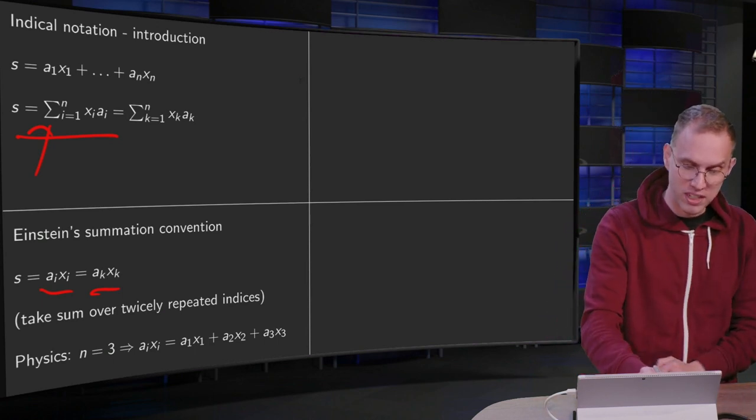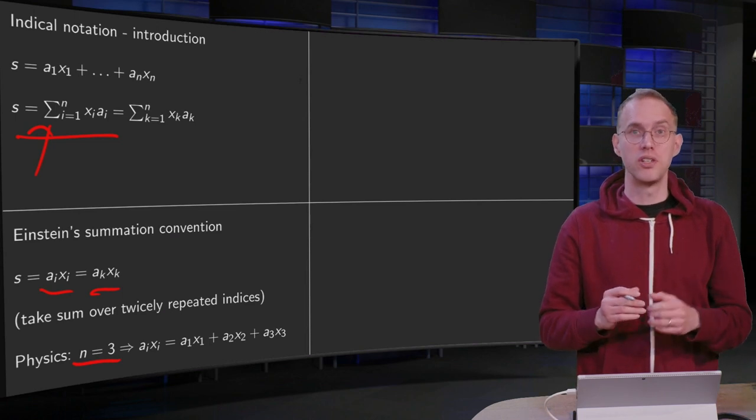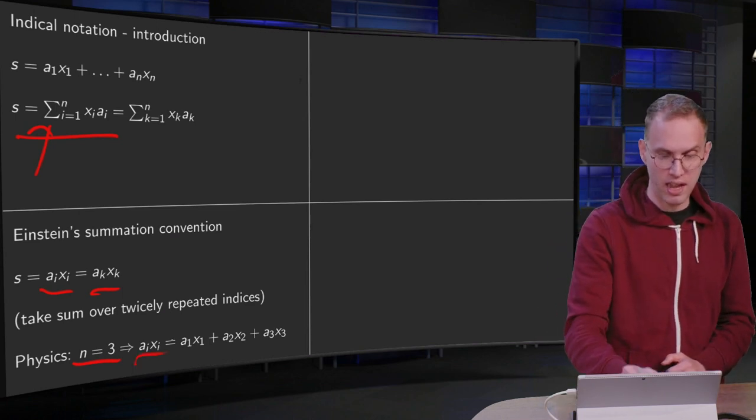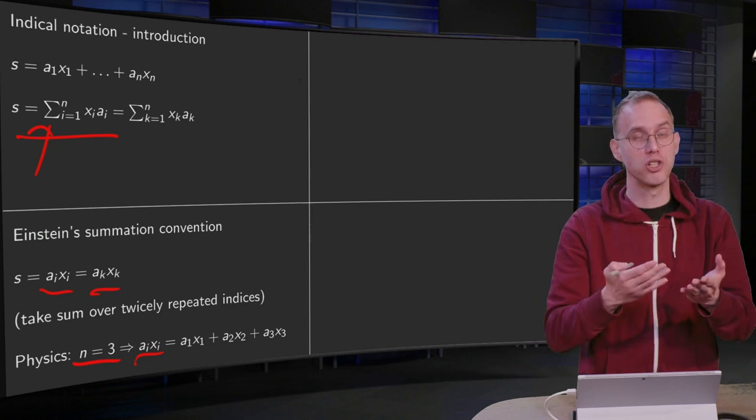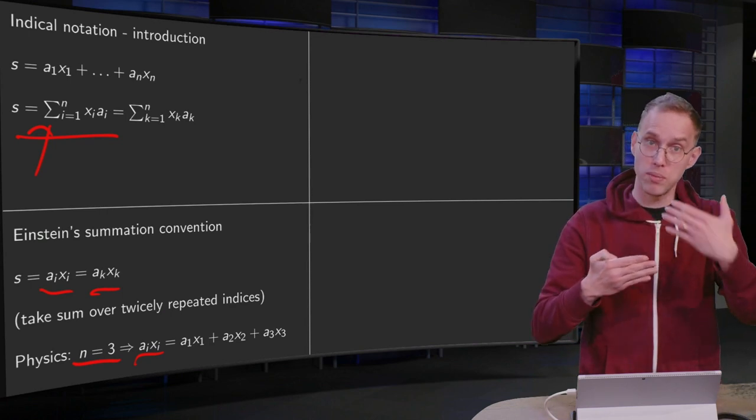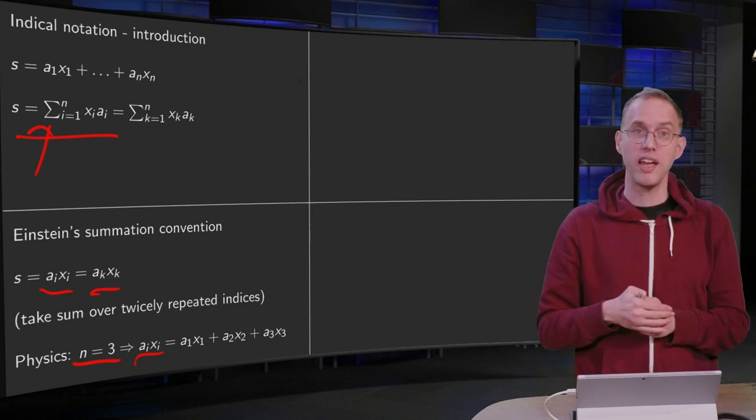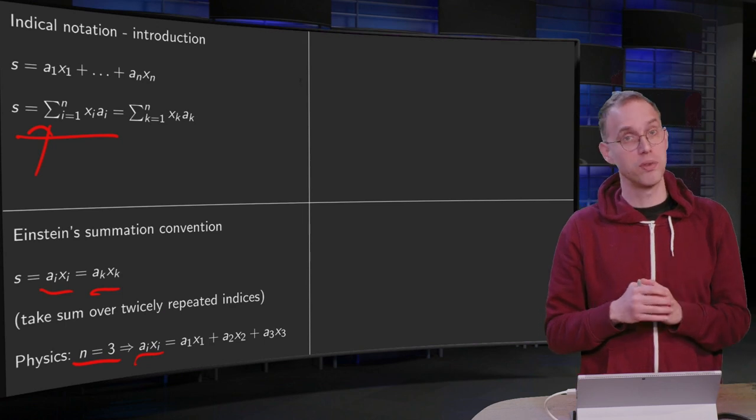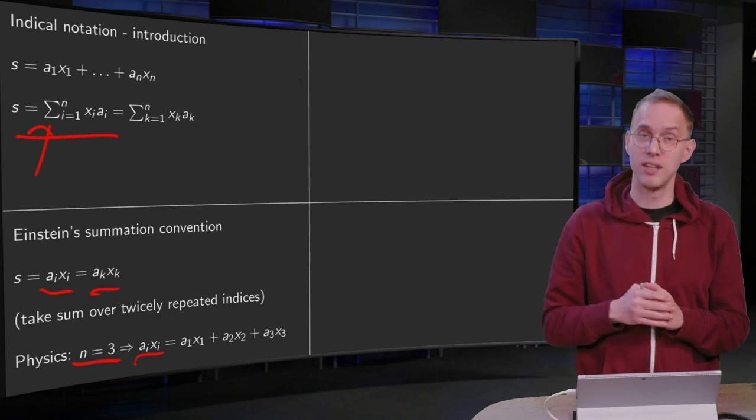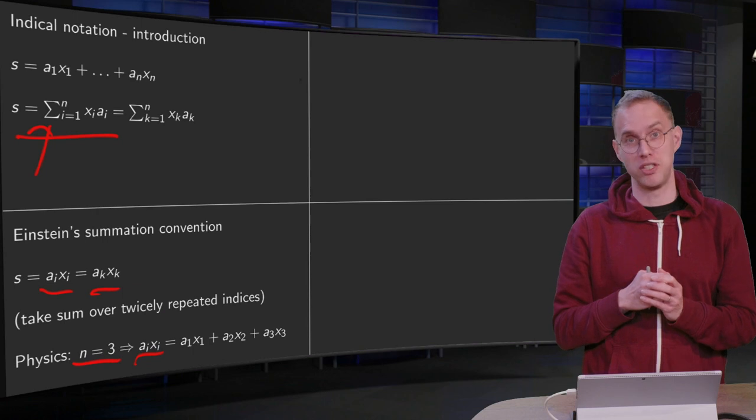Now in physics this n equals 3 usually, so in physics we often have that aᵢxᵢ means index occurs twice, so we have to sum over it from 1 to 3. So aᵢxᵢ equals a₁x₁ plus a₂x₂ plus a₃x₃. That's the idea of the summation convention.